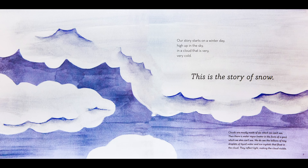Our story starts on a winter day, high up in the sky in a cloud that is very, very cold. This is the story of snow. Clouds are mostly made of air, which we can't see, and water vapor — water in the form of a gas, which we also can't see. We do see the billions of tiny droplets of liquid water and ice crystals that float in the cloud; they reflect light, making the cloud visible.